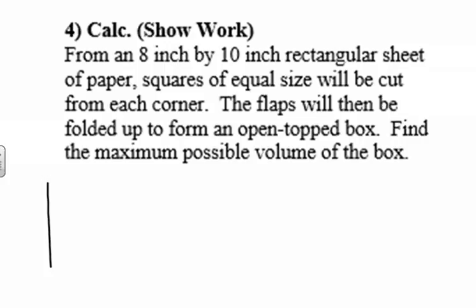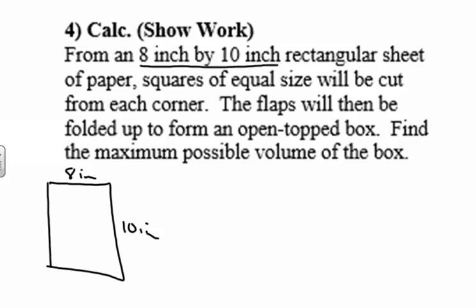It says from an 8-inch by a 10-inch rectangular shape — by 10 inches — a square of some size will be cut off from each corner. So what we have is some size will be cut out, and that's going to be called X. So all these different corners are going to be cut out, X units long each one. The flaps will then be folded up to form an open top box.